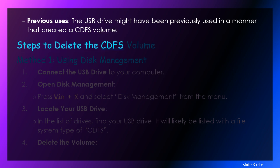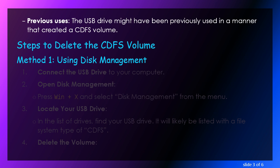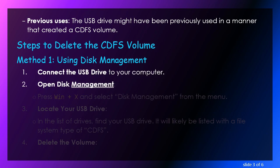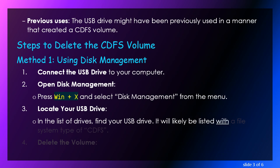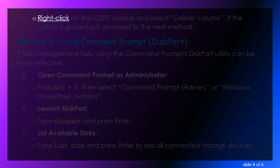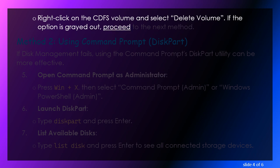Steps to Delete the CDFS Volume. Method 1: Using Disk Management. Connect the USB drive to your computer. Open Disk Management by pressing Win + X and selecting Disk Management from the menu. In the list of drives, locate your USB drive — it will likely be listed with a file system type of CDFS. Right-click on the CDFS volume and select Delete Volume. If the option is grayed out, proceed to the next method.